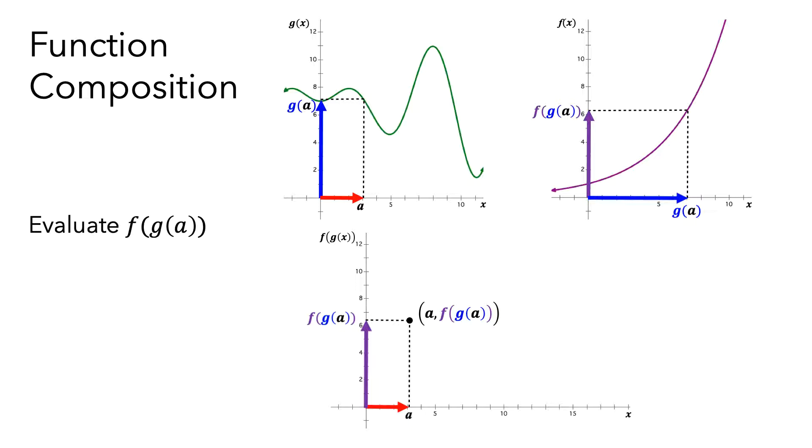Next, let's quickly recap the meaning of a derivative. We often write the derivative of a function f(x) at the point x equals a as f prime of a. We can think of this graphically in terms of slopes.